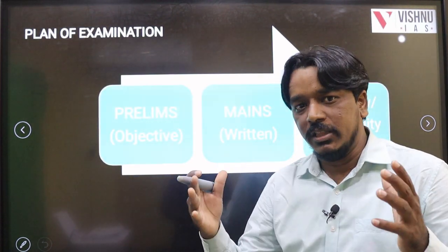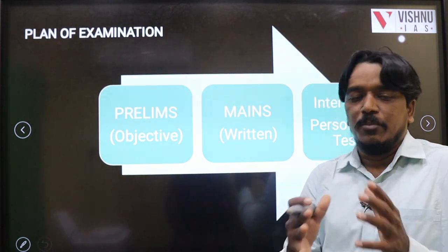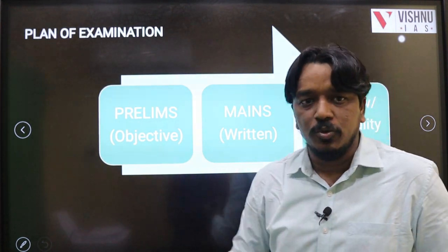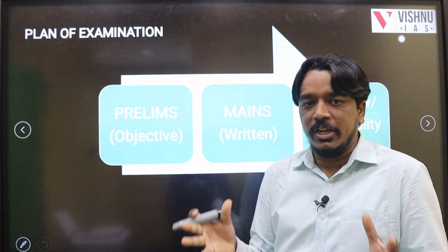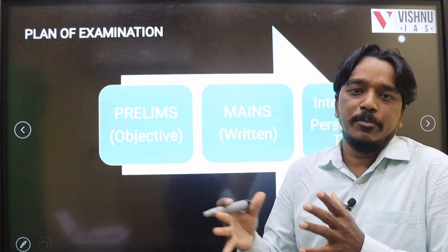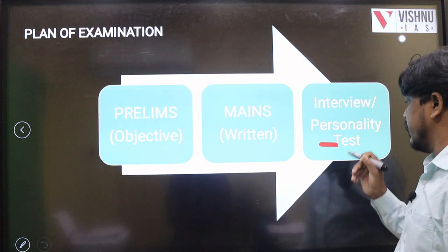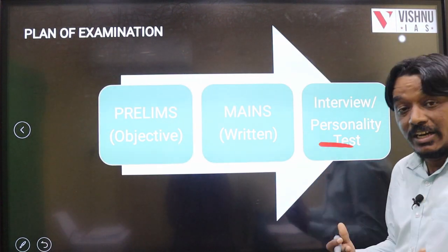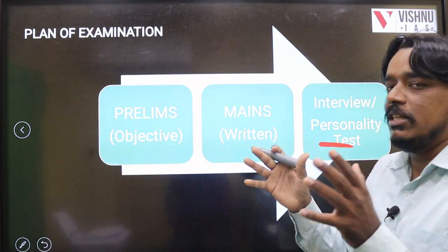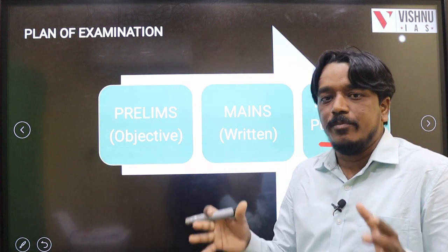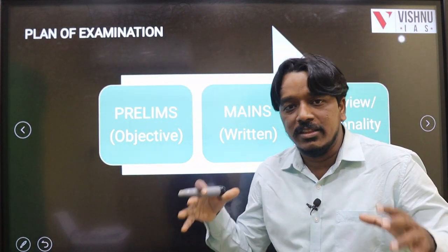Let's understand the plan of examination in UPSC. First, at the prelims level, it's completely objective MCQ type questions. At stage 2, you find a complete written descriptive type examination. The final stage is an interview or personality test. These are the three main important stages, and in this session we will specifically focus on CSAT Paper 2 analysis.